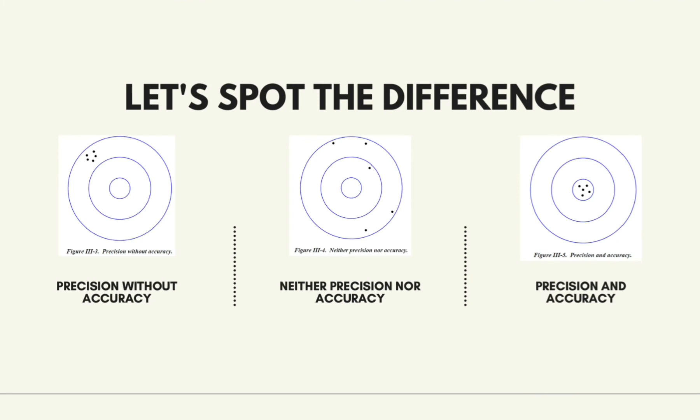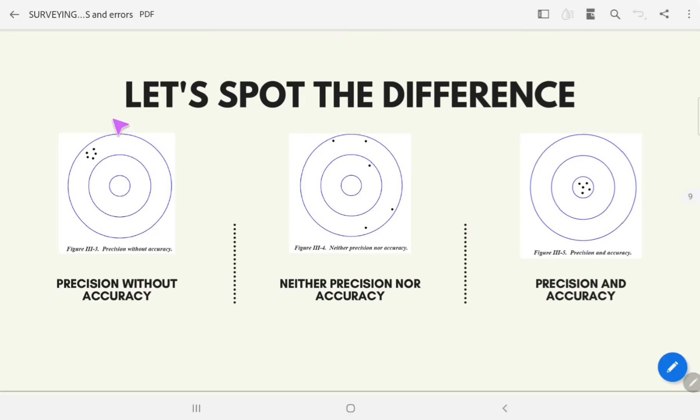These concepts are illustrated in Figures 3-3 through 3-5 with a target shooting example. In Figure 3-3, all five shots are closely grouped indicating good precision, but the accuracy is poor because the shots are far from the center of the target. In Figure 3-4, the five shots appear randomly scattered about the target, indicating neither accuracy nor precision. In Figure 3-5, all five shots are closely spaced about the target's center, indicating both precision and accuracy.